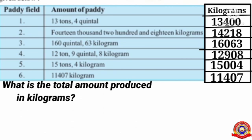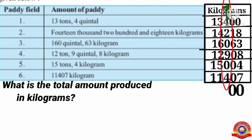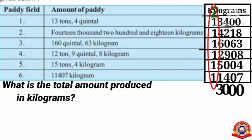Let's add all the amounts together. Adding the ones column: write zero, carry over 3. Adding the tens column: write zero, carry over 1. Adding the hundreds column: write 0, carry over 2. Adding the thousands column: write 3, carry over 2. Continuing the addition, the total comes to 83,000. That is the total amount of paddy produced in kilograms: 83,000 kilograms.